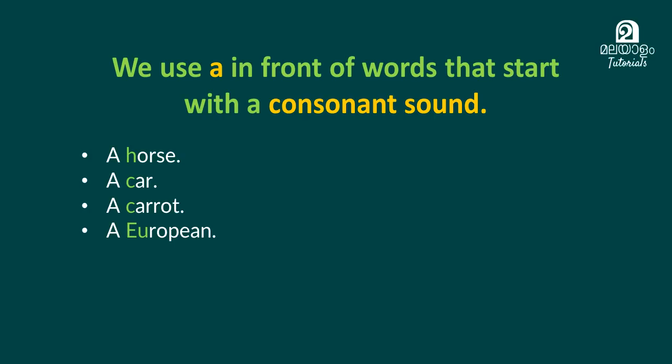So, if a word starts with 'European' or 'U' making a 'yoo' sound, what is it? It is a consonant sound item. If we start with letters that make a consonant sound, we use 'a'. Simple.